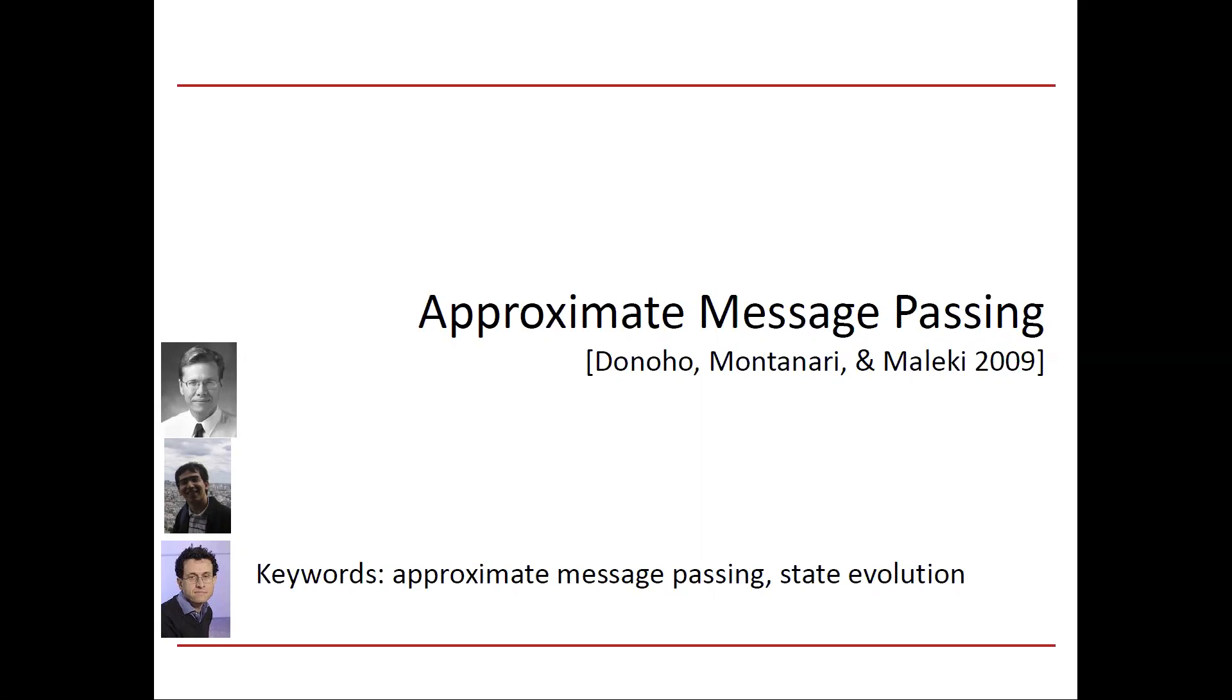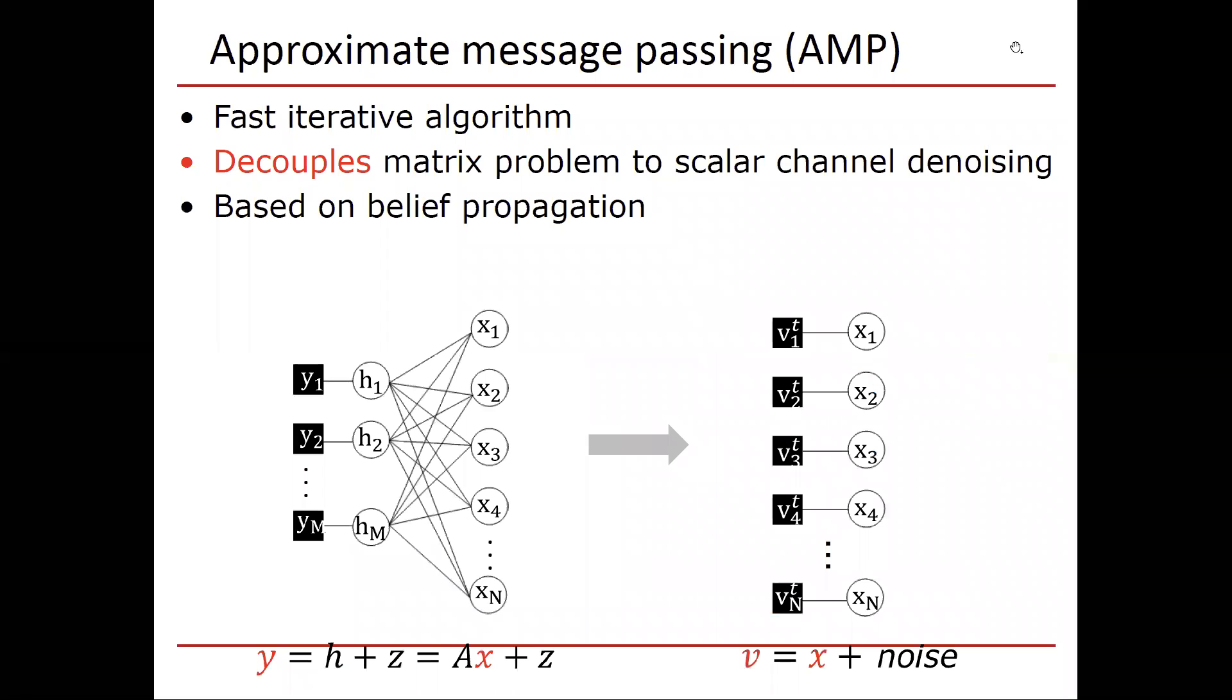The big idea is that they're utilizing this decoupling where every single estimate of every single location, every entry in the vector is going to be performed through a scalar estimation scheme. So what approximate message passing or AMP is, it's a fast iterative algorithm. You're beginning with this complicated linear inverse problem.